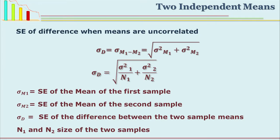We have to find out the standard error of difference, written as SED or sigma D. The standard error of difference is also a type of standard deviation — standard deviation is generally for a sample, whereas standard error of difference is a standard deviation of the population means. The formula: SE of difference between two means (m1 minus m2) equals the square root of (standard error of mean one squared plus standard error of mean two squared).